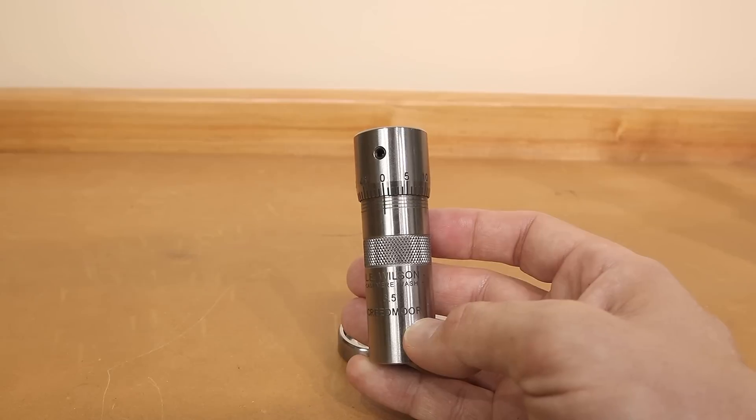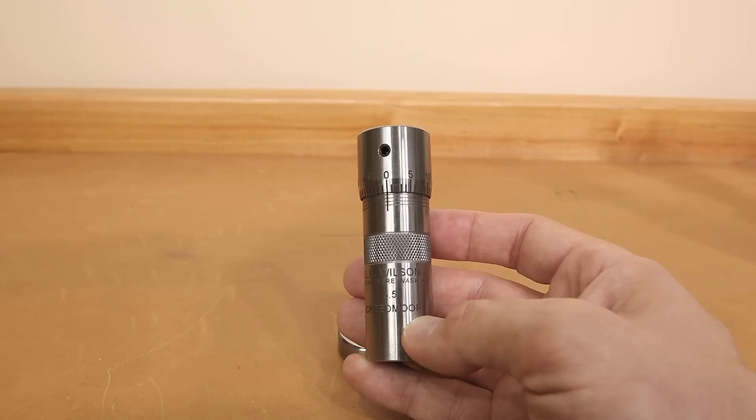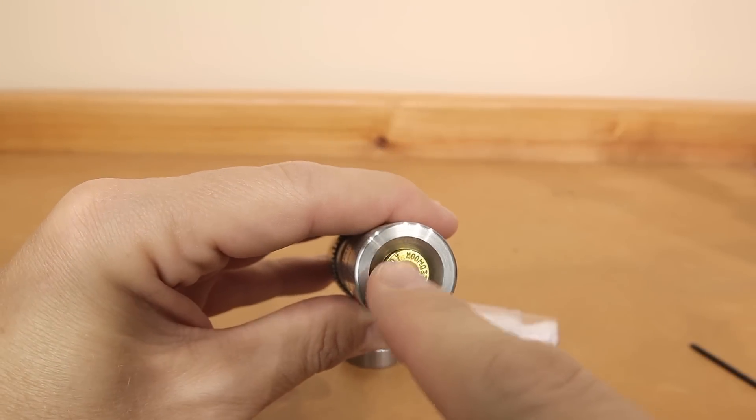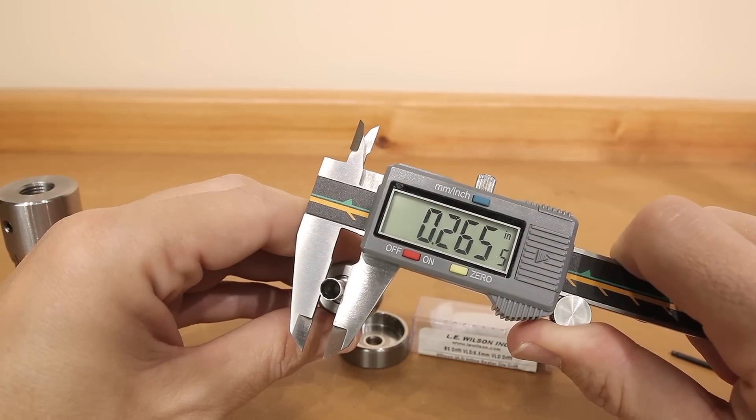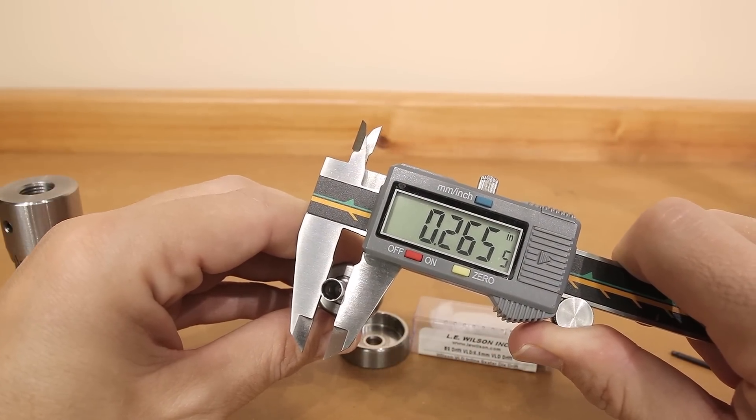One of the biggest advantages of a die like this is it holding everything in perfect alignment. When the brass is in the die, there's very little slop, if any at all. The area of the die that holds the projectile alignment is so close to projectile diameter.